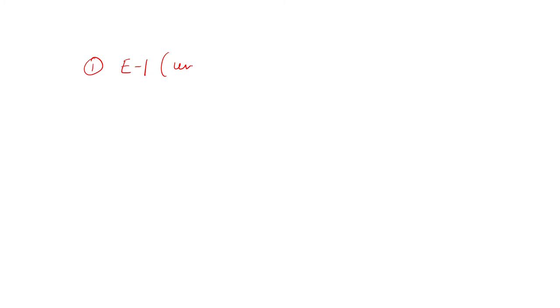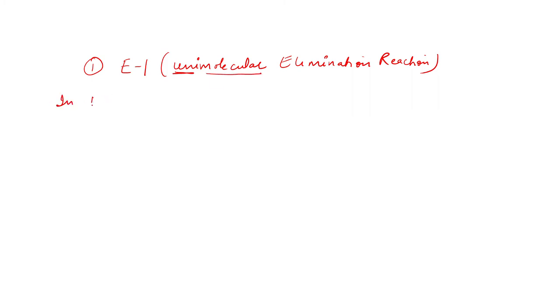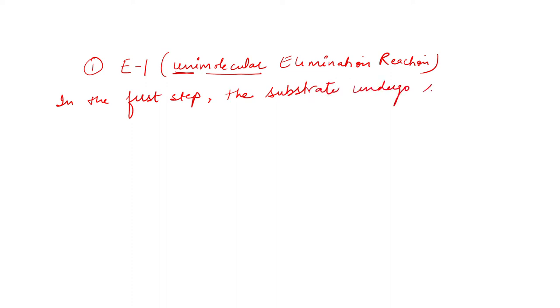The first one is unimolecular elimination reaction — we can say E1. Unimolecular elimination reaction means single molecule. In the first step, the substrate undergoes slow heterolysis.